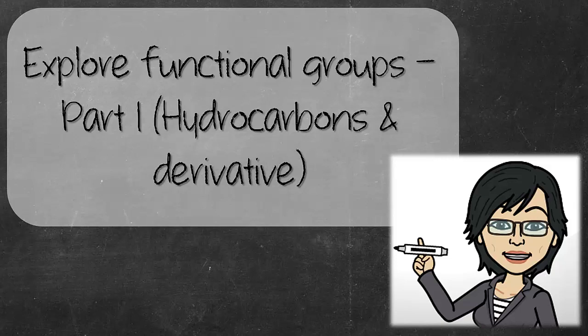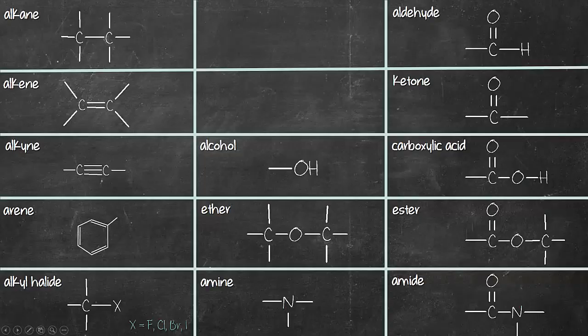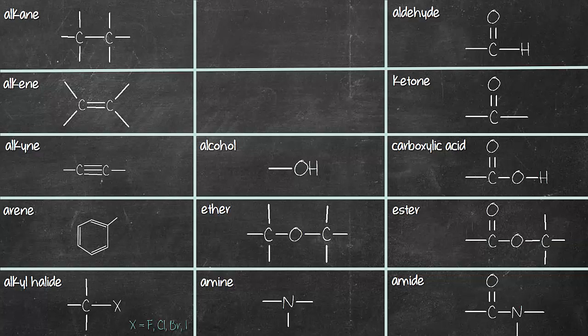In this video, we'll explore examples for the five hydrocarbons which are alkane, alkene, alkyne, arene, and alkyl halide. I've posted a video on the introduction to the 13 functional groups. The link is on the top as well as in the description box below. Do check it out to get more info on how to differentiate these groups.